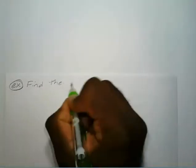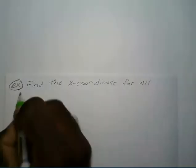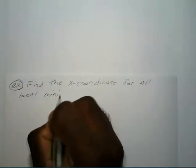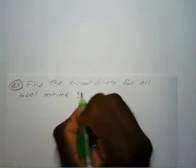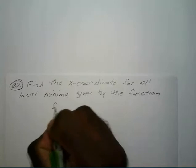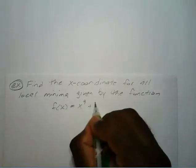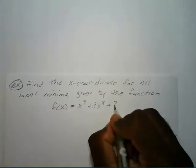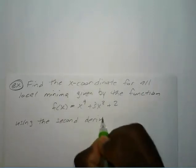Let's say for example, if you want to find the x-coordinate for all local minima — and minima just means your maximum and minimum, so they combine them — given by the function f of x equals x to the 9th power plus 3x to the 8th power plus 2, using the second derivative test.